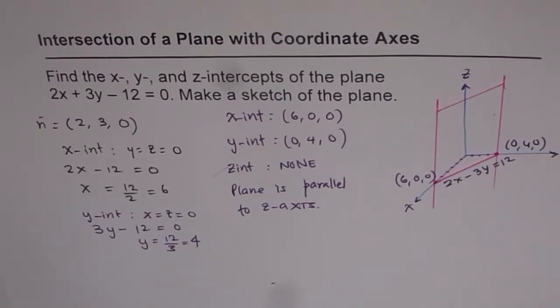So now you have seen two different kinds of examples. If you get all three intercepts, x, y, and z intercepts, then you represent the plane in the form of a triangle. But if you get only two intercepts, then you can represent it as a parallelogram shown here.